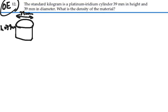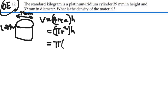Okay so if we were to calculate the volume, the volume would be equal to the cross-sectional area times the height. Cross-sectional area is going to be pi times the radius squared for that circular area times the height. And since the diameter is 39 millimeters, the radius is going to be 19.5 millimeters.